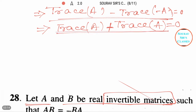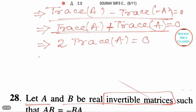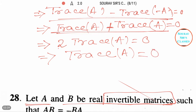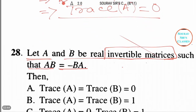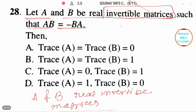In the next step, we can write 2·trace(A) equals zero. Putting trace(A) on the right-hand side, we get trace(A) equals zero. So ultimately, trace(A) equals zero.